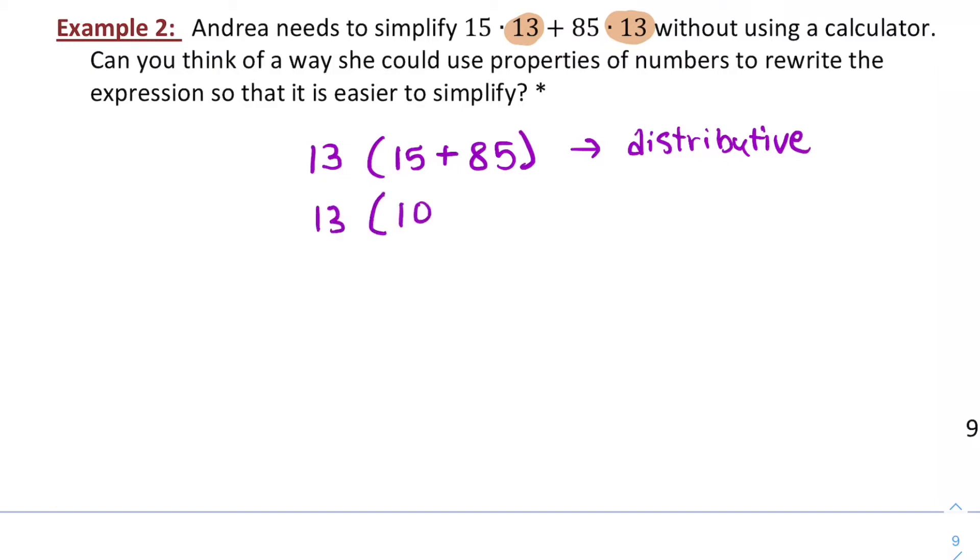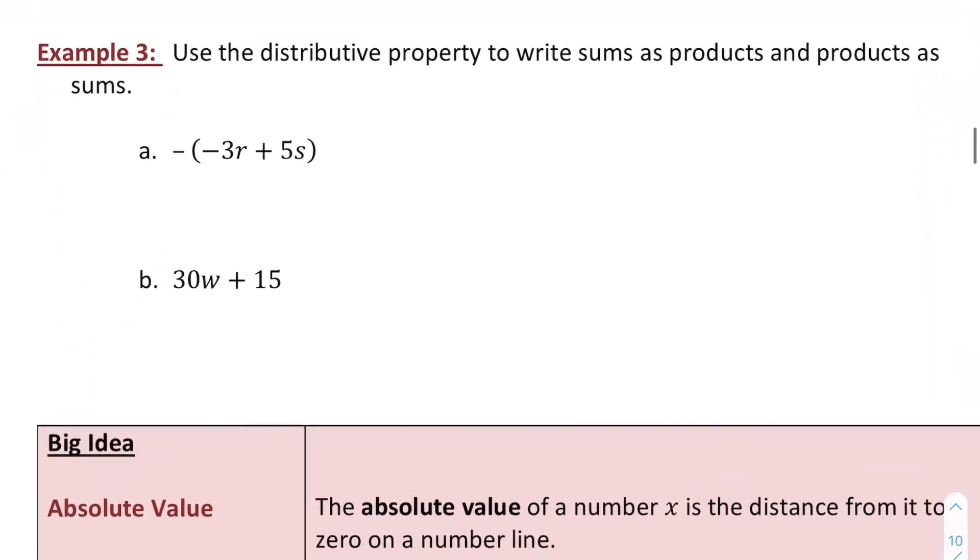And then I could do 15 plus 85 and get 100. And it's easier to multiply 13 times 100. You can go back and forth with that distributive property, writing products as sums and sums as products.